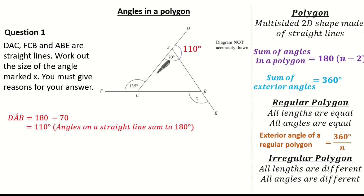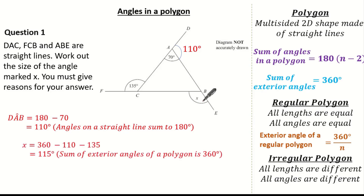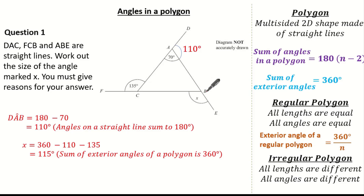Now we know the exterior angles — we have 135, 110, and X — and we know the sum of exterior angles is 360 degrees. So we can work out X, which is simply 360 subtract 110 subtract 135, which gives us angle X to be 115 degrees, because the sum of exterior angles is always 360 degrees.